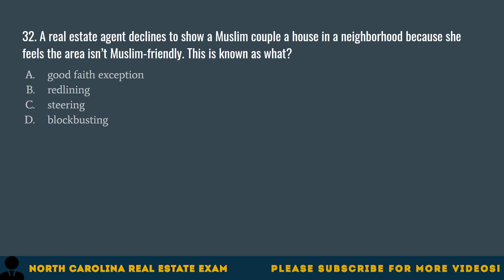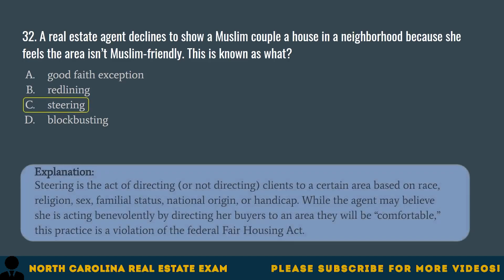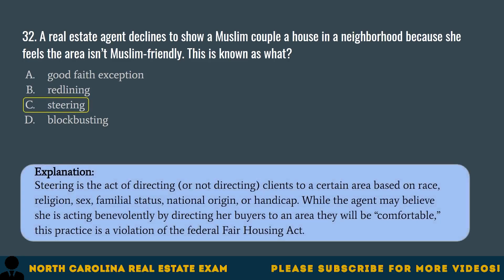Question 32. A real estate agent declines to show a Muslim couple a house in a neighborhood because she feels the area isn't Muslim-friendly. This is known as what? A. Good faith exception. B. Redlining. C. Steering. D. Blockbusting. The correct answer is C. Steering. Steering is the act of directing or not directing clients to a certain area based on race, religion, sex, familial status, national origin, or handicap. While the agent may believe she is acting benevolently by directing her buyers to an area they will be comfortable, this practice is a violation of the Federal Fair Housing Act.